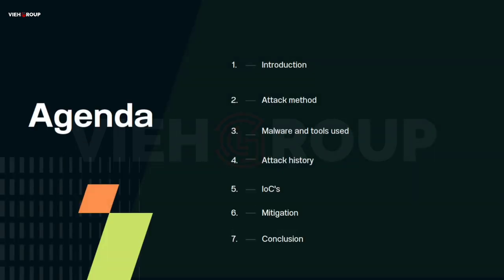These are the topics we are going to cover today: first, the introduction of APT10 — what it is, where it started, when it started, and the current scenario. Then we'll cover attack methods used by APT10, then the malware and tools widely used in their campaigns, some famous attack history, IOCs (indicators of compromise), how we can mitigate that specific threat group, and finally the conclusion.